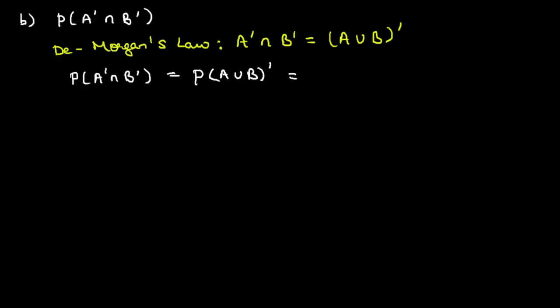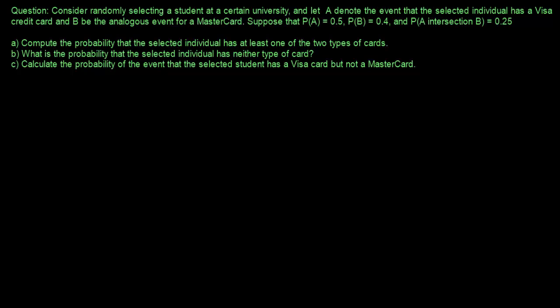The probability of (A union B) complement equals 1 minus probability of A union B. We calculated the probability of A union B in part A as 0.65. So the probability of A complement intersection B complement is equal to 0.35 — meaning the probability that the selected individual has neither type of card is 0.35.